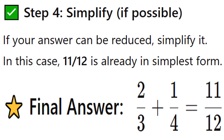Step 4: Simplify if it is possible. If your answer can be reduced, simplify it. In this case, 11 over 12 is already in simplest form.